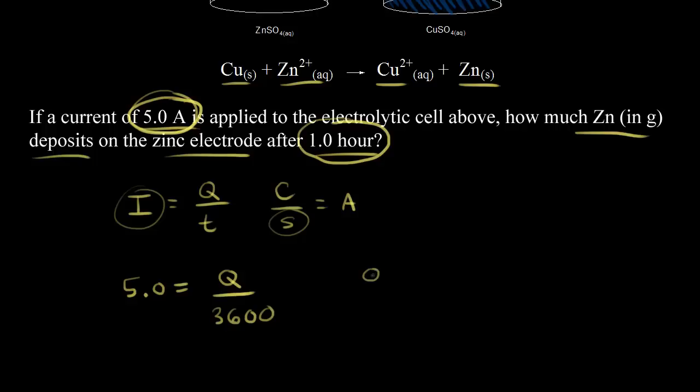Now we can solve for Q, we can solve for the charge. So 5 times 3,600 is equal to 18,000. After one hour, we're talking about 18,000 Coulombs.